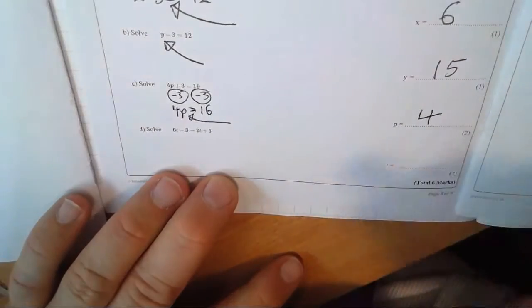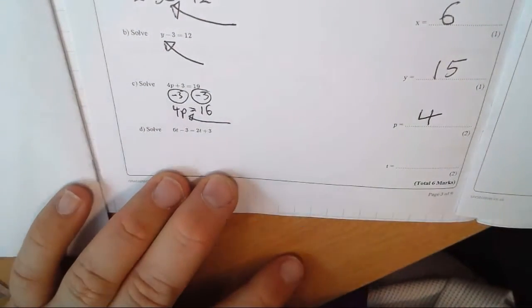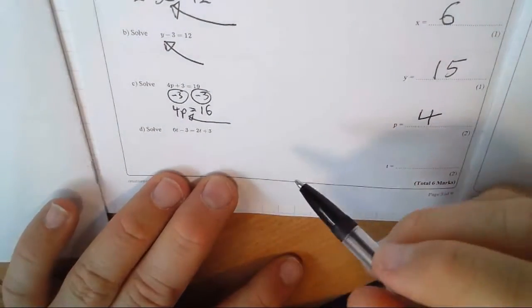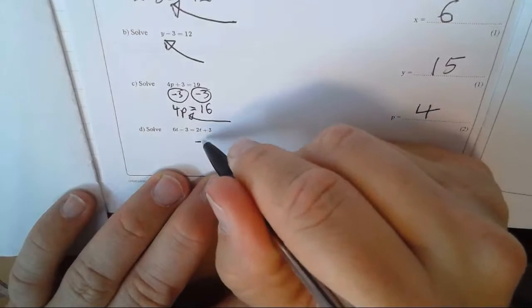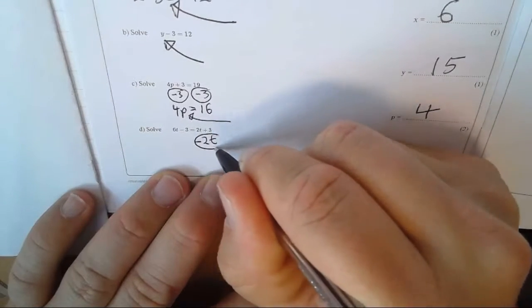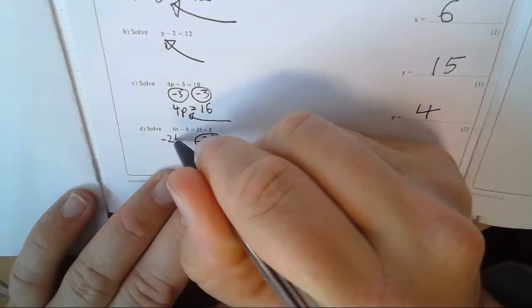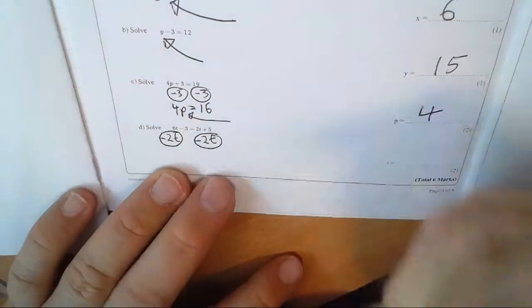Now, I don't think anyone got the last one right, because the last one's difficult. You've got unknowns on both sides. So what I need to do is get rid of the unknowns from one side, and I can do that by taking away 2t from both sides. Do a full correction for this, please.